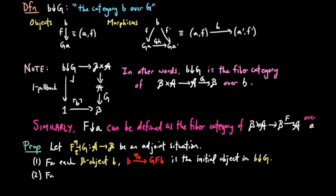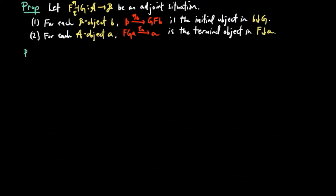Similarly, two, for each A object A, the co-unit epsilon A is the terminal object in the category F over A.